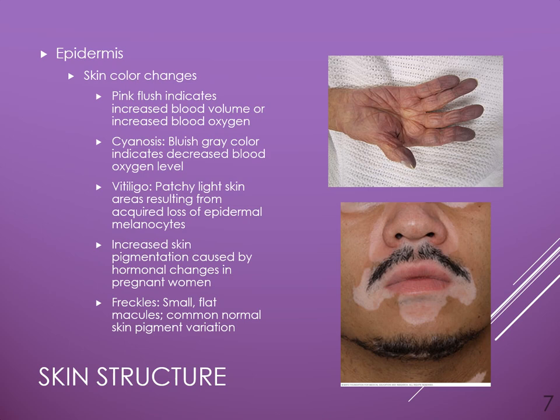There can also be increased pigmentation from various hormone changes. Exposure to UV light can cause the melanocytes to darken and can also cause sunspots. Freckles are small, flat macules and are a common normal skin pigmentation variation. However, if those freckles start to change, raise, or do something abnormal, that could be a sign of malignancy and should be checked out as soon as possible.